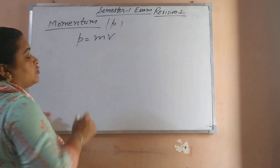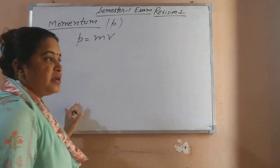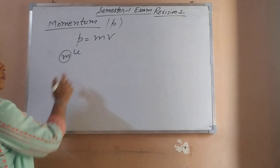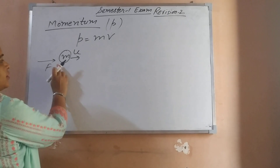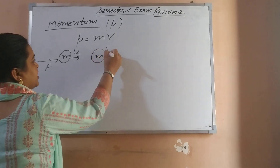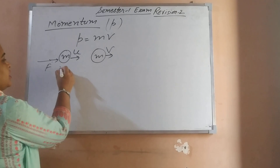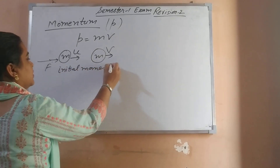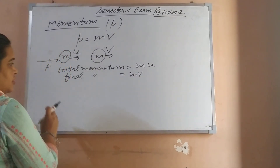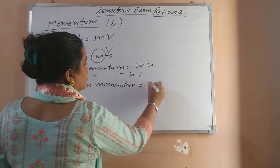Newton's Second Law states that the rate of change of momentum is directly proportional to the applied unbalanced force in the direction of force. Consider a body of mass M moving with initial velocity U. A force F is applied on it, so the body's velocity changes to V. Initial momentum is M×U, final momentum is M×V, and change in momentum is MV minus MU.